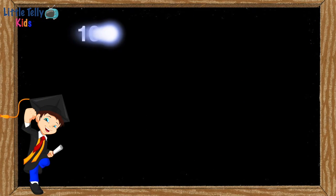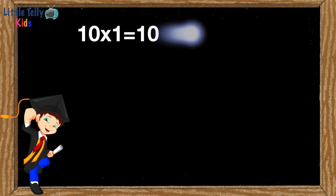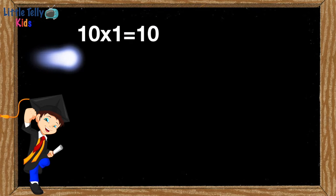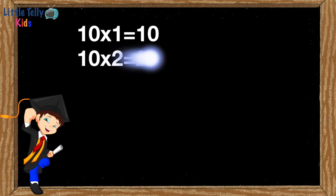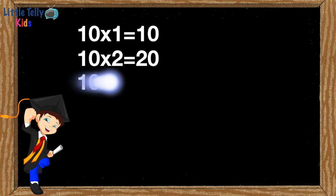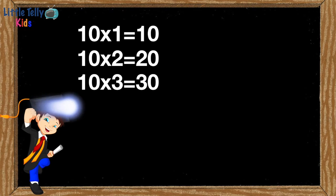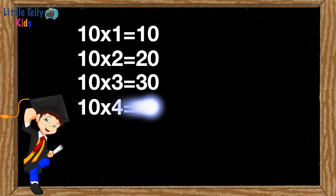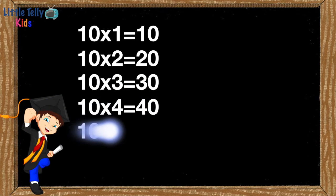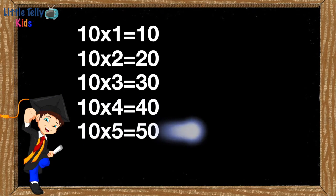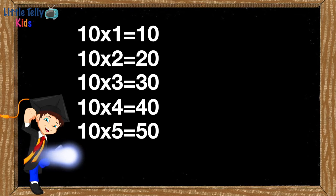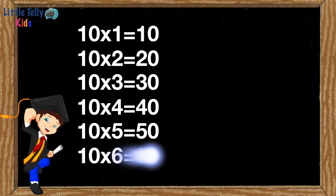Ten ones are ten. Ten twos are twenty. Ten threes are thirty. Ten fours are forty. Ten fives are fifty. Ten sixes are sixty.